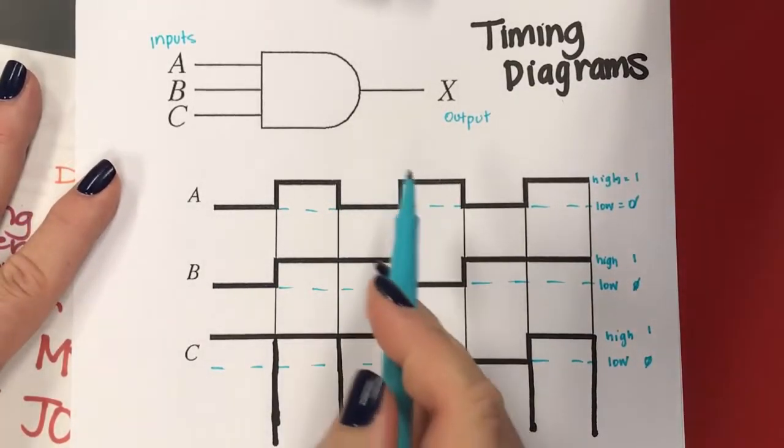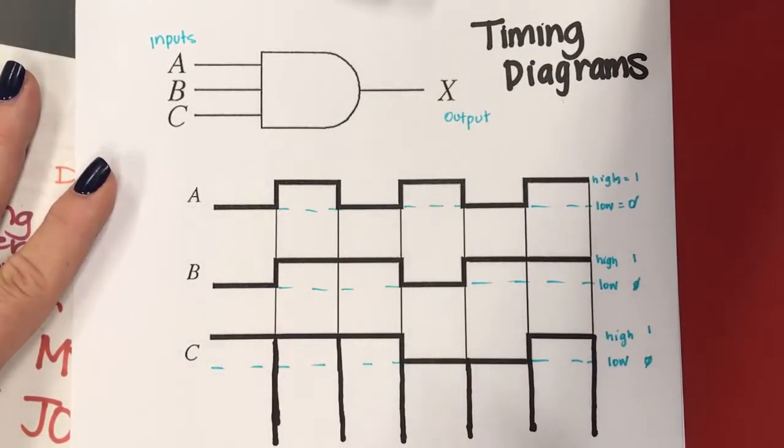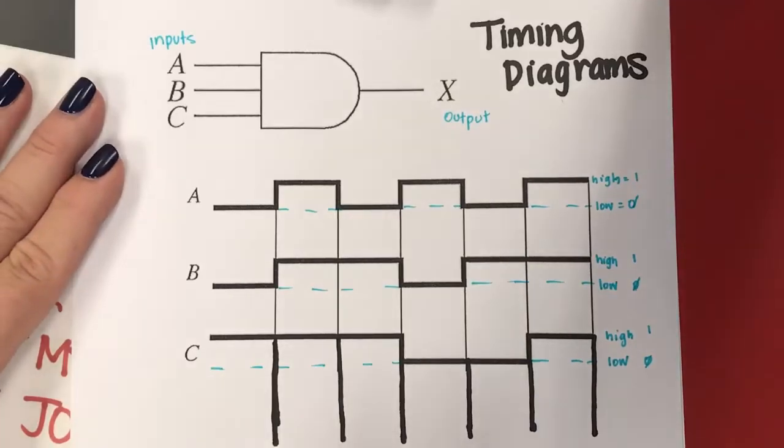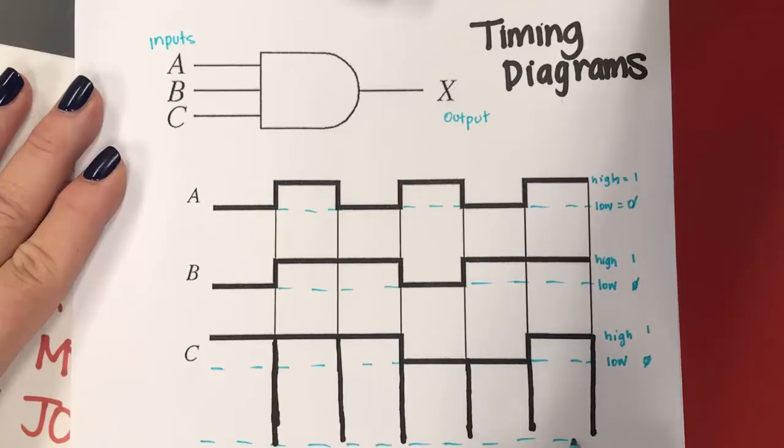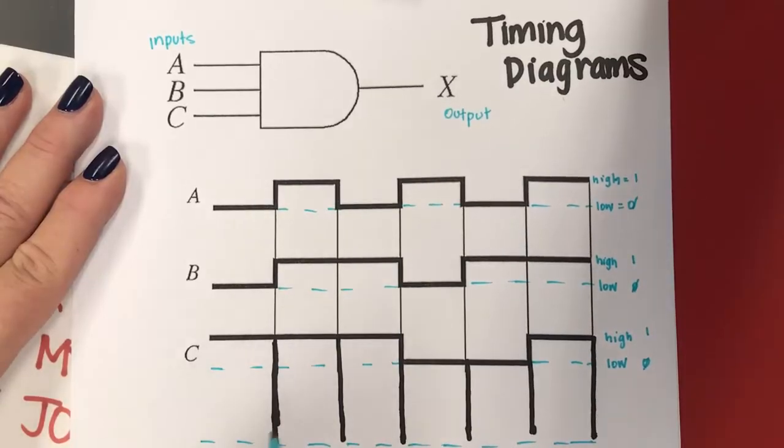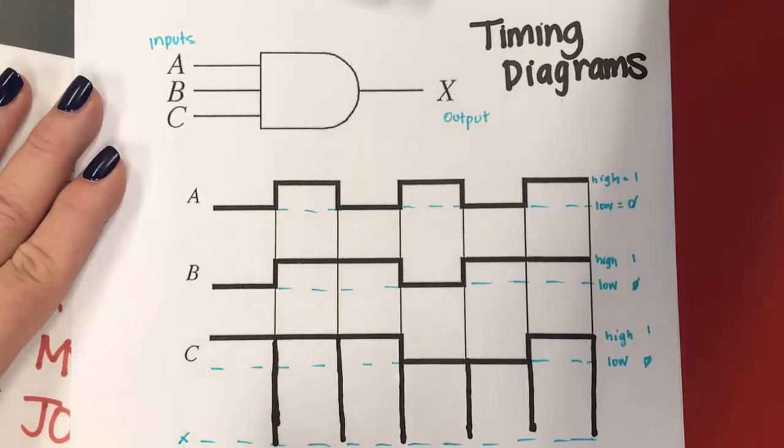Okay, so now I want to draw the timing diagram, the waveform for X. So I've kind of extended my lines there, and I'm going to come across first and draw my dotted line for the low value of X. And I'm going to label that one X as well.